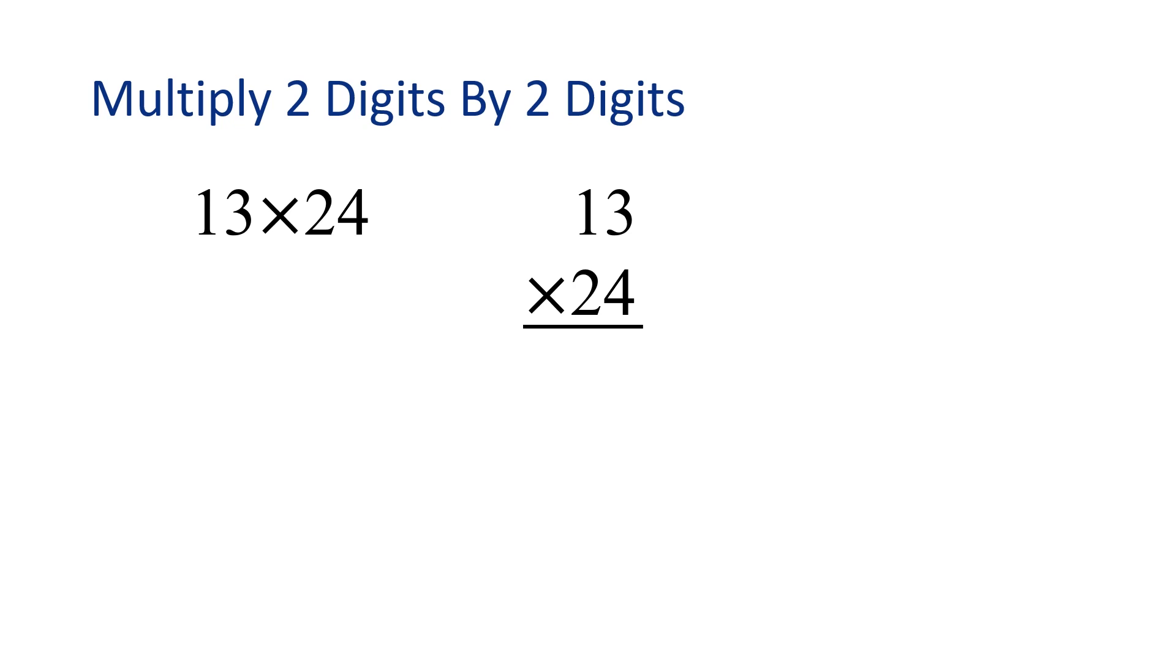To multiply, we will start with the 4 on the bottom, and we will multiply by 3, and then by 1. Then, we are going to multiply by the 2 on the bottom, by the 3 on top, and then the 2 times 1. Let's get started.